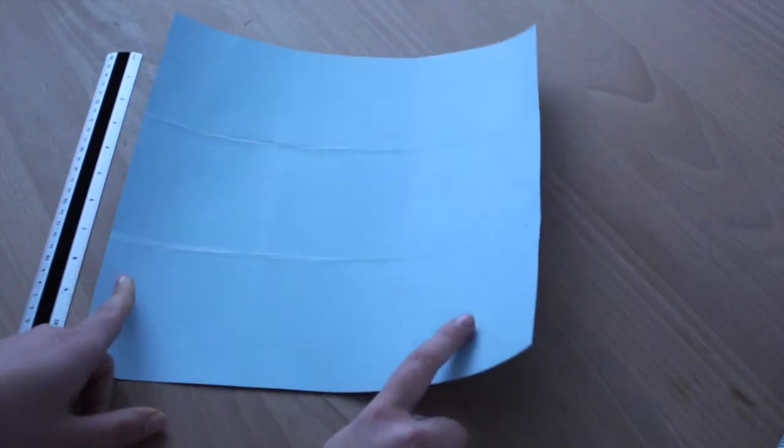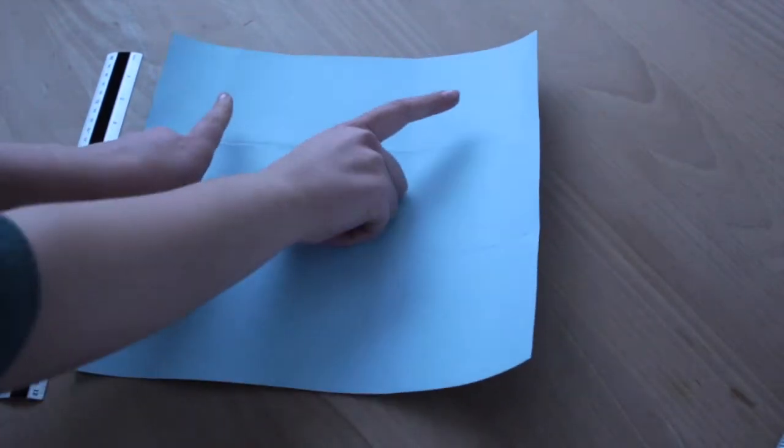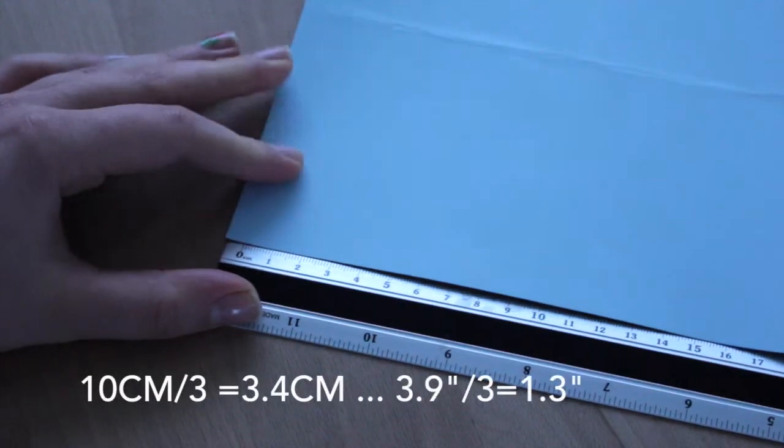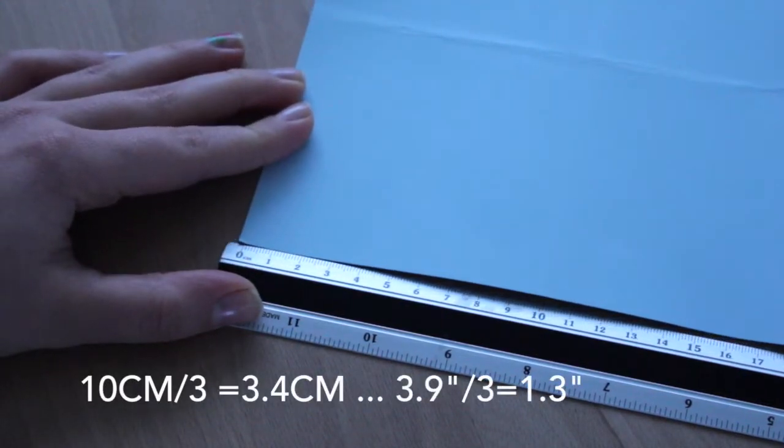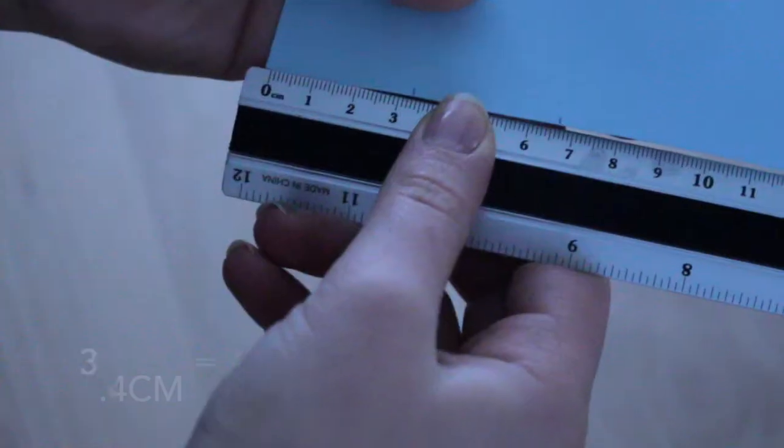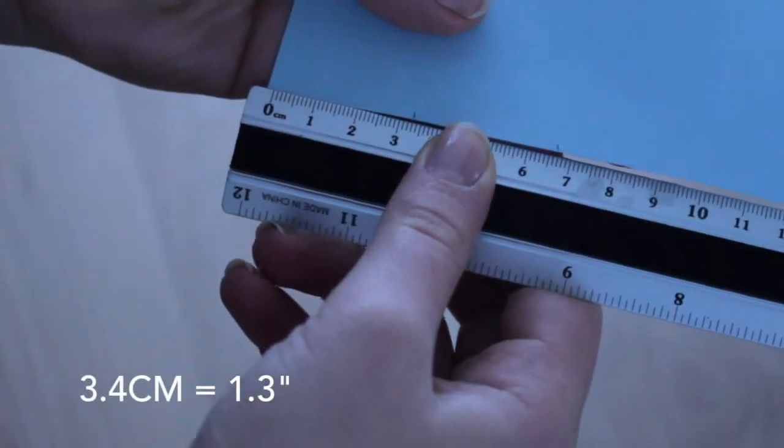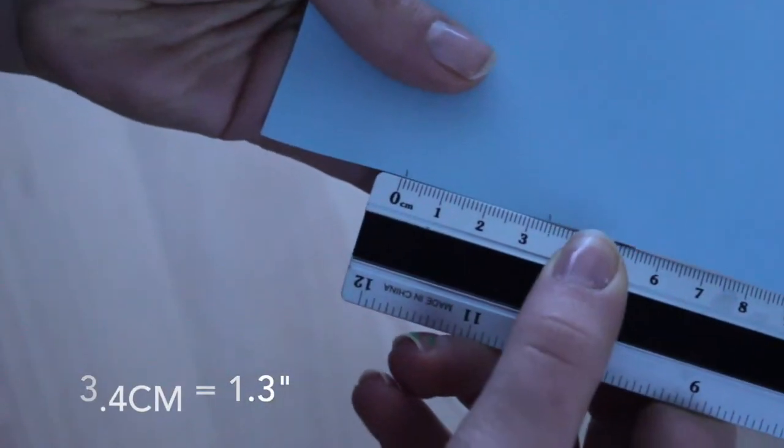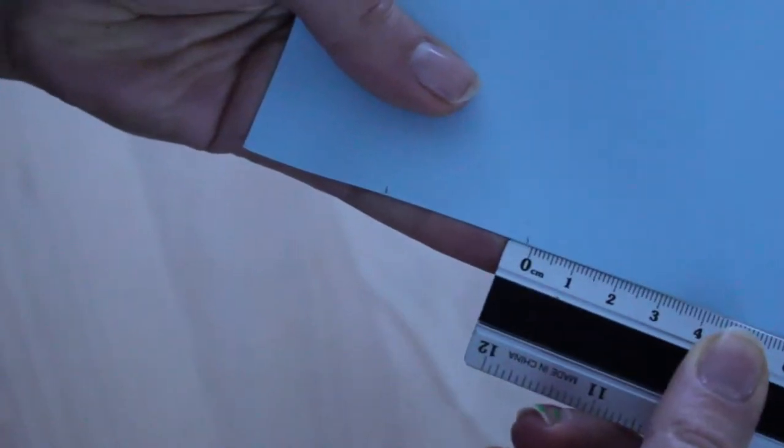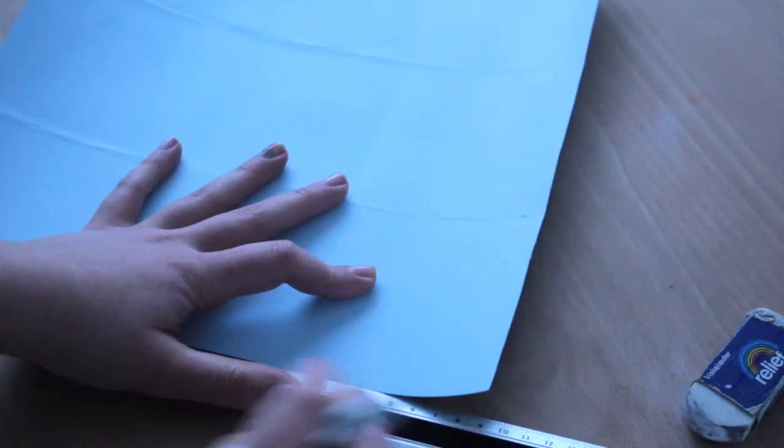Now we need to work on the four edges. Take one square that measures 10 centimeters and divide that by three. Then make some markings that measure 3.4 centimeters, and remember to do it on all the edges.